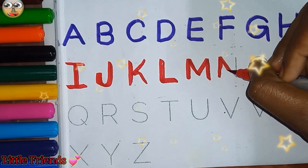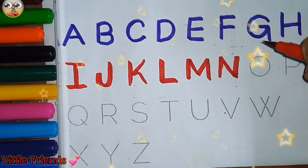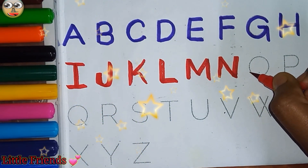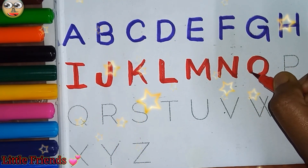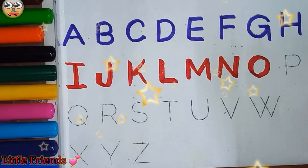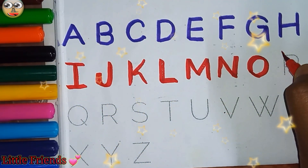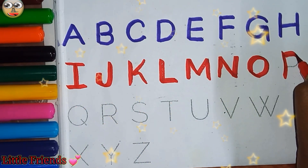N, N for nose. N for nest. O, O for owl. O for orange. P, P for pen.